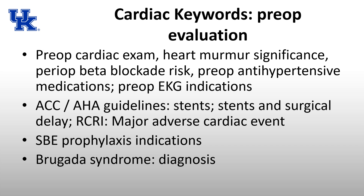I'm going to focus on the ones that showed up on the 2021 in-training exam. I split the keywords down into five subsets: pre-op evaluation, cardiac physiology, heart disease, anesthesia for cardiac surgery, and congenital heart disease. The keywords related to pre-op evaluation include the actual pre-op cardiac exam, significance of heart murmurs, perioperative beta blockade and its risks, perioperative antihypertensive medications, indications for pre-op EKG, ACC/AHA guidelines on stents and surgical delay, the RCRI major adverse cardiac event risk calculator, prophylaxis indications for endocarditis, and Brugada syndrome diagnosis.